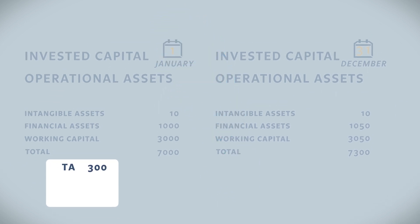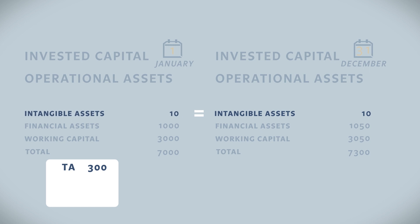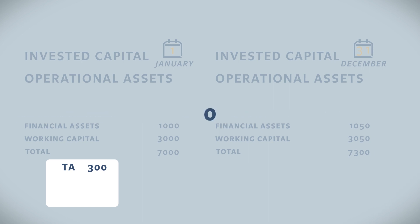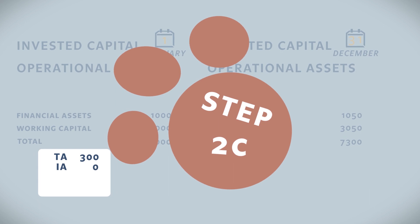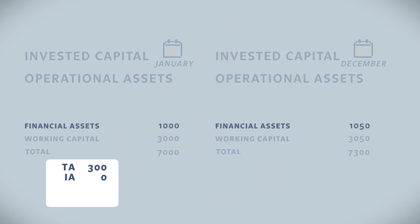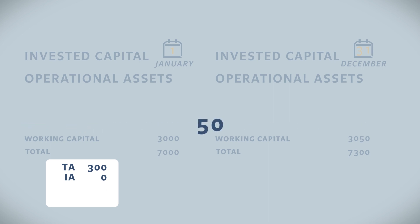Next, let's have a look at intangible assets. The assets have not changed in value — reported at 10 at the start of the year and at the end of the year — meaning we've invested nothing here, so zero goes to CAPEX. Financial assets have increased from 1000 to 1050 due to an additional loan in cash that we provided to one of our clients. This is considered an investment of 50 and goes to CAPEX.